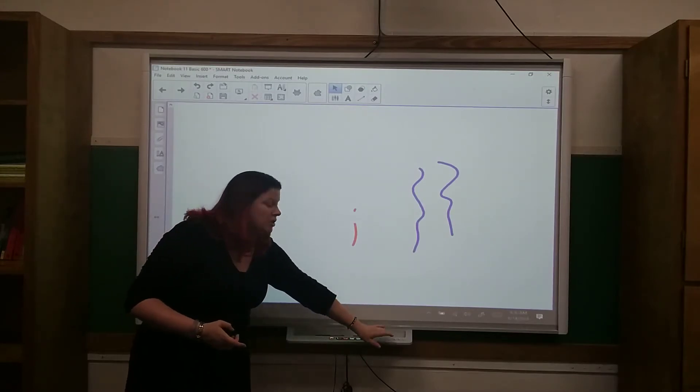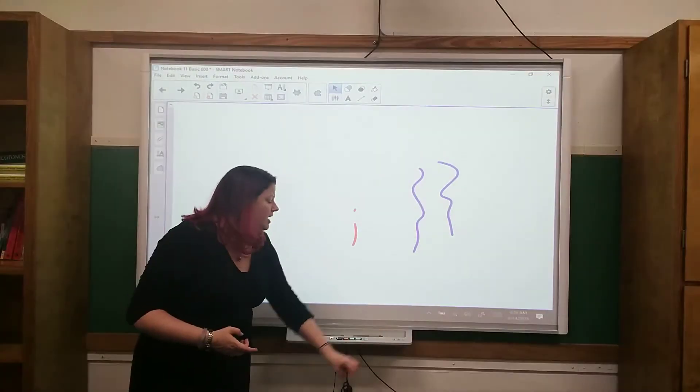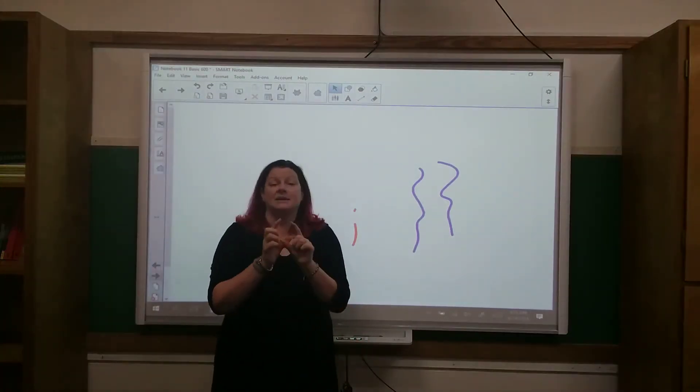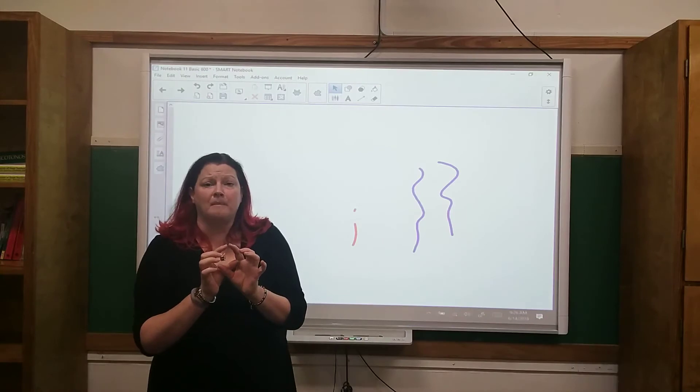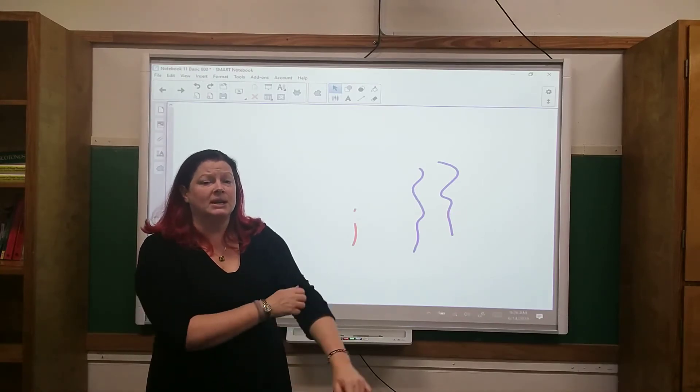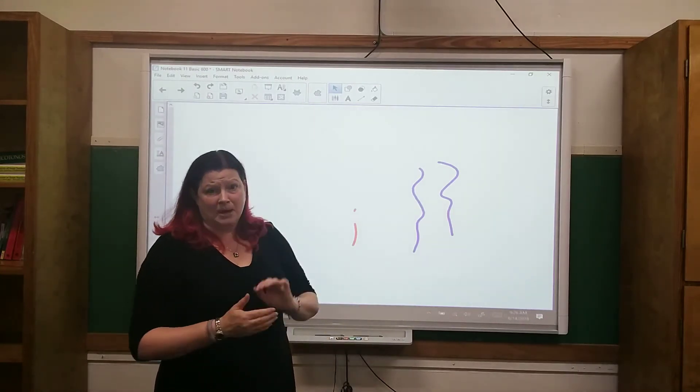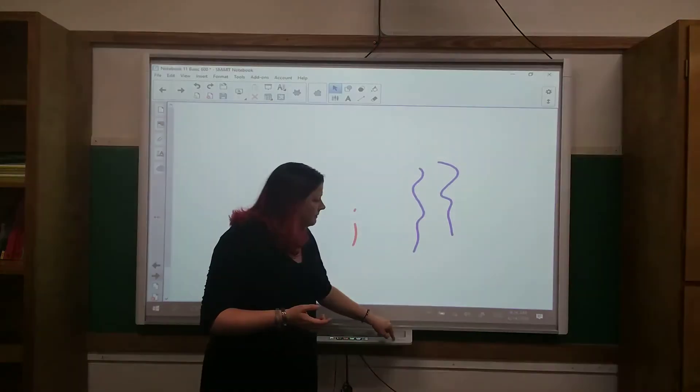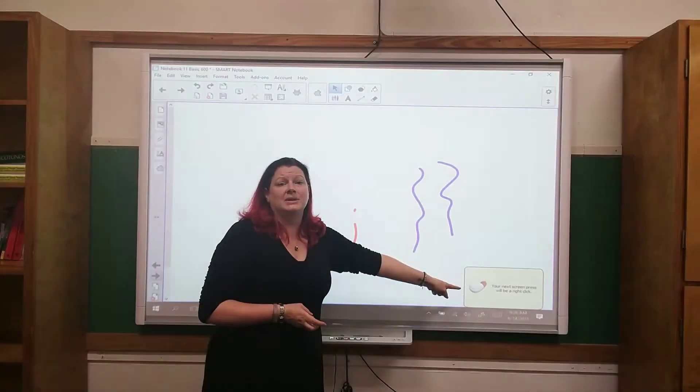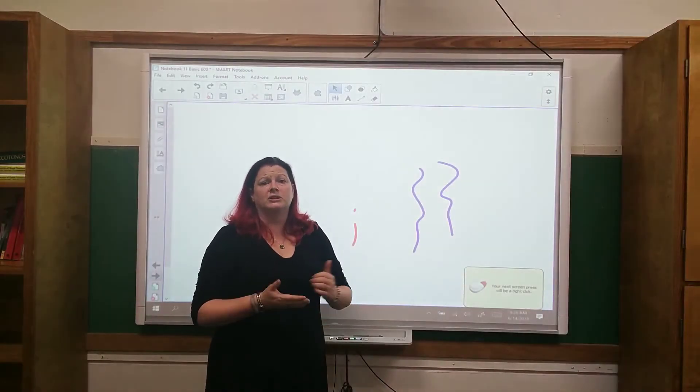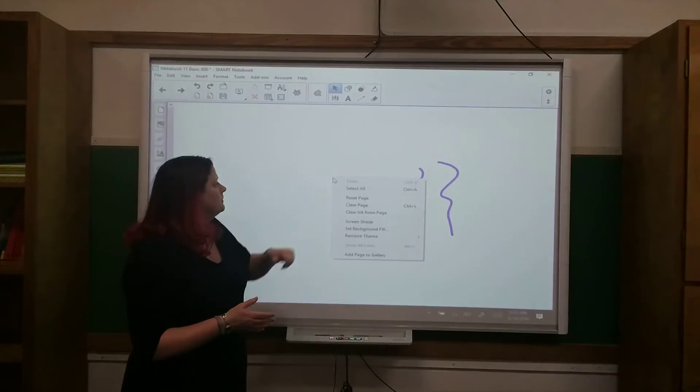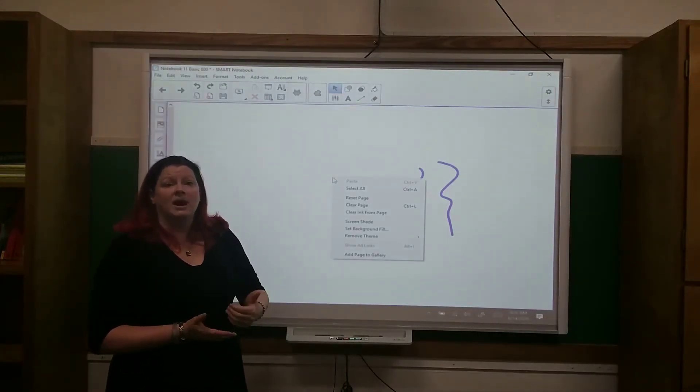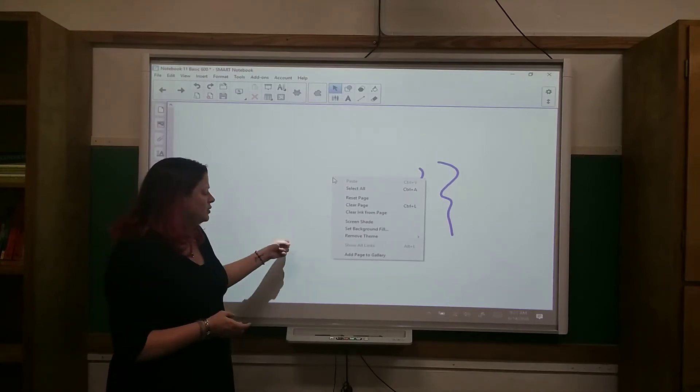If we move to the far right-hand side of the pen tray, we have three additional smaller buttons. The first button here has an icon that looks like your desktop mouse. The right mouse button is shaded in, and that's how you would get a right mouse click when you are working on the board. So if you press this button, you get a message in the bottom right of your screen that says, the next time you touch the board, it's going to be a right mouse click. And the next time you touch, you get the same pop-out menu that you would get if you had clicked the right mouse button from your desktop.